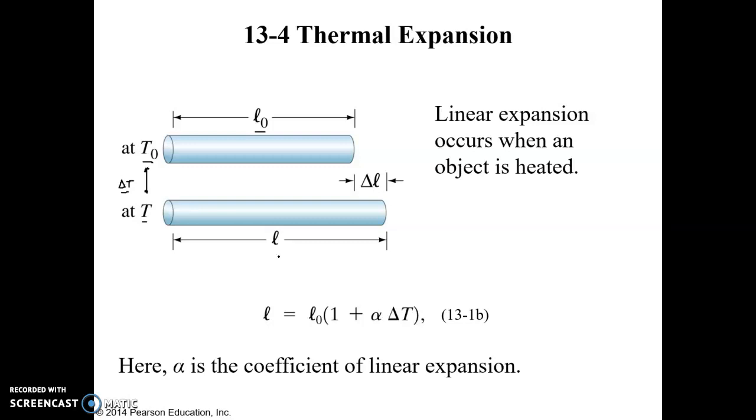The final length L is equal to the original length L₀ multiplied by 1 plus alpha delta T. So delta T is the change in temperature. What is this alpha? It is a coefficient of linear expansion. It depends on the material. Different materials have different coefficients of thermal expansion, and this can be found in your textbook. There's a table that lists alpha values for a variety of materials. This is the formula for finding how much something will expand for a given change in temperature.